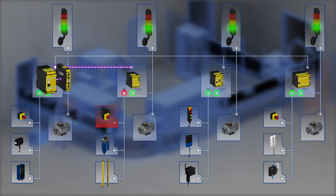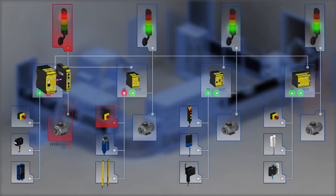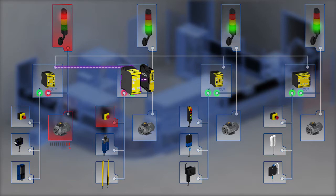The safety controller shuts down the drive in system component 1 via the safe outputs and stops the feeder process. The error is displayed via a status output signal. The detected fault 'emergency stop' is at the same time transferred to the internal universal communication module. The communication module sends the command 'shutdown outputs' to the remote I/O module so that the motor is shut down.